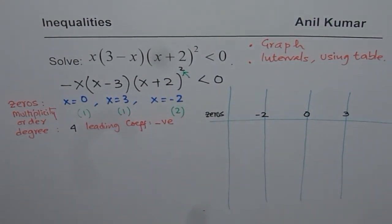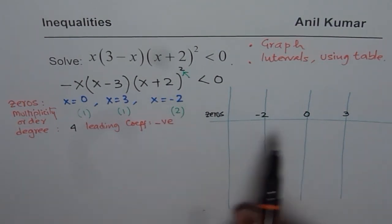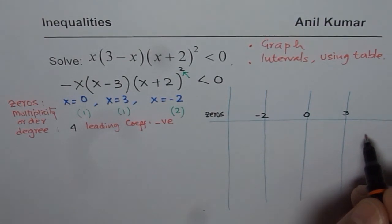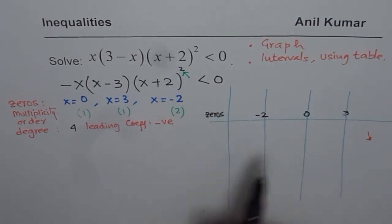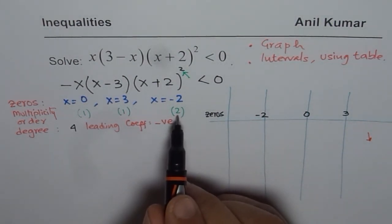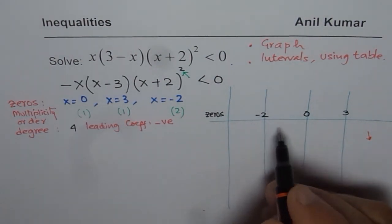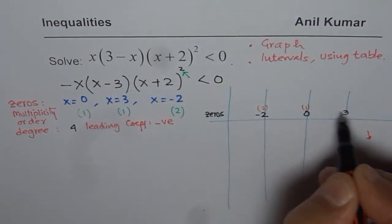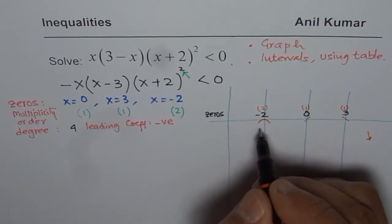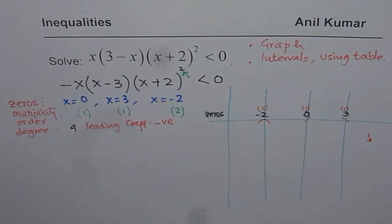The graph of the function should open downwards since the leading coefficient is negative — negative means the right side is down. The zero at x equals minus 2 has multiplicity 2, so the graph touches but does not cross there. The other zeros are linear, so the graph crosses through those points.